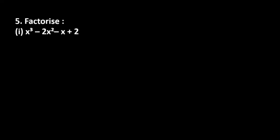Let's start with question number 5. It says factorize x cube minus 2x square minus x plus 2. So how do we factorize it when it is a cubic polynomial? In the last case, we saw that it is a quadratic polynomial, so we did middle term splitting. But it is not possible here because it is a cubic type. So which method do we have to use? We have to use the hit and trial method.